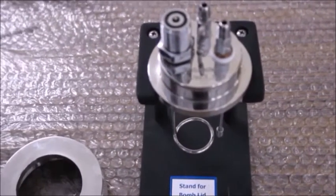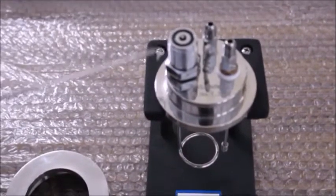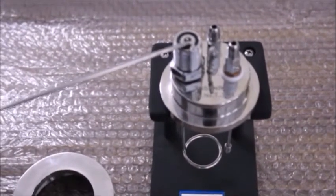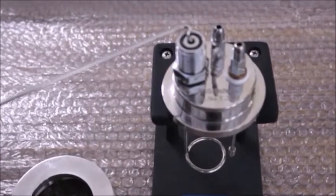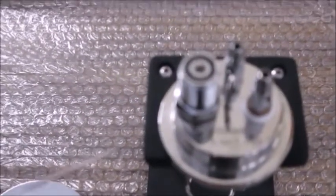The bomb lid consists of the non-return valve, also called the NRV. It is through this valve the bomb body is filled with oxygen.